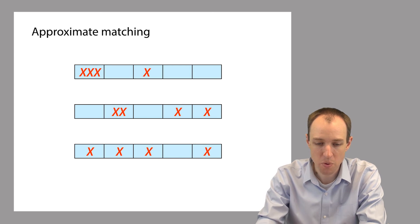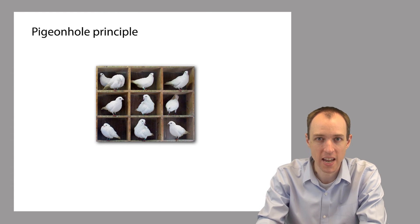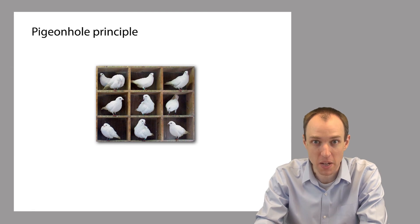So the principle that we're using here is a little bit like the pigeonhole principle, which you may have heard of before. So the principle goes something like this. If you have ten pigeons, and you're going to put them into nine pigeonholes, then at least one pigeonhole is going to have more than one pigeon in it. So in this example, the upper left hand pigeonhole has two pigeons in it.